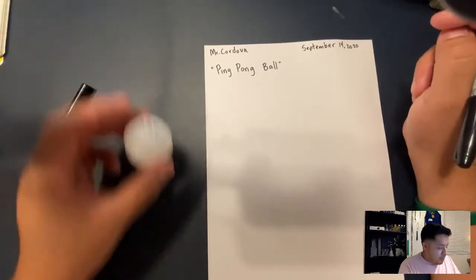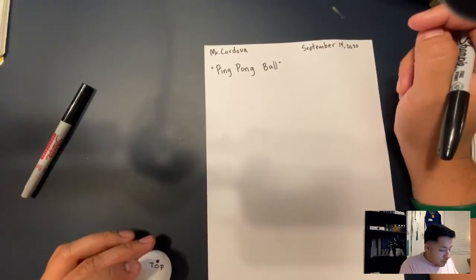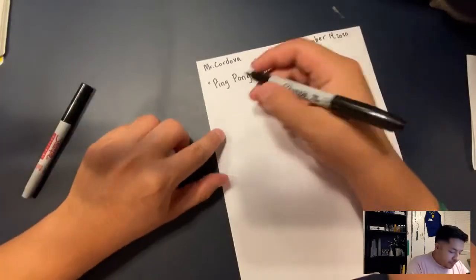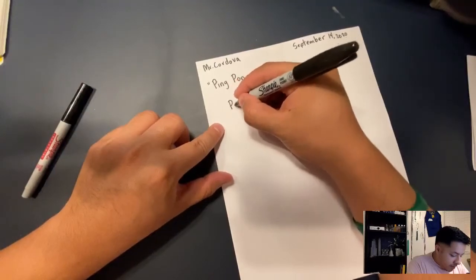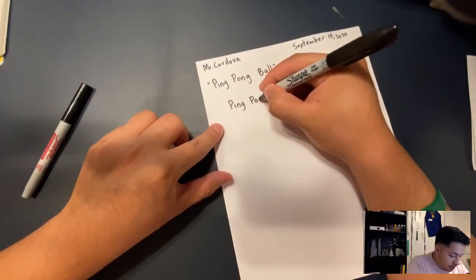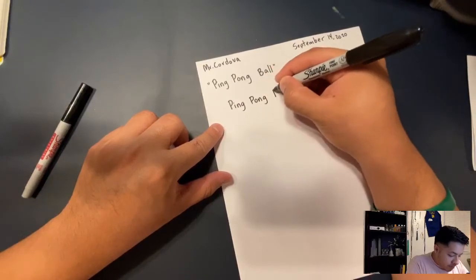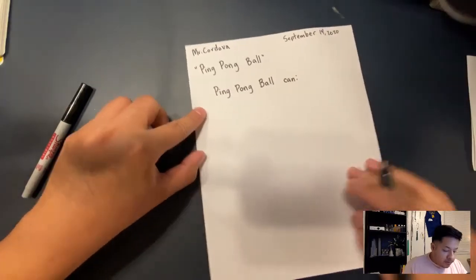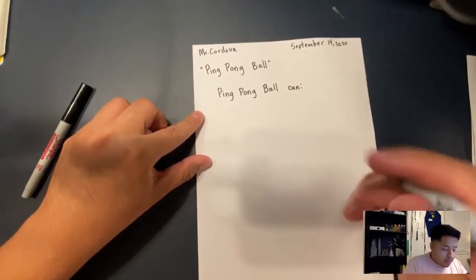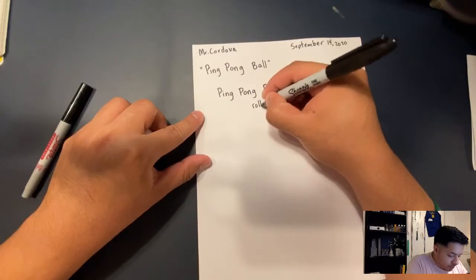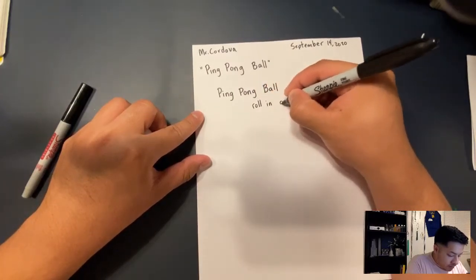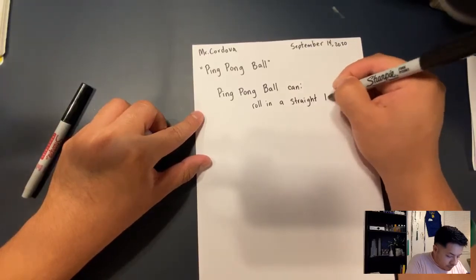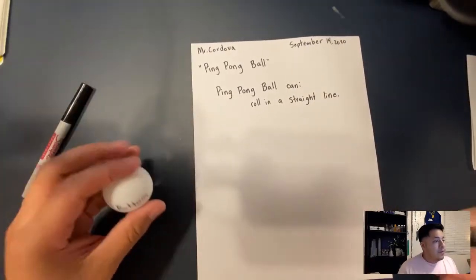Now we're going to talk about how a ping pong ball can roll in a straight line. So let's write: a ping pong ball can roll in a straight line.